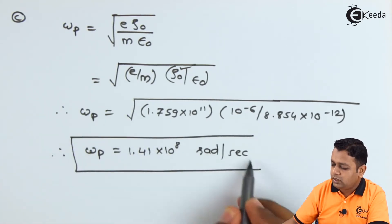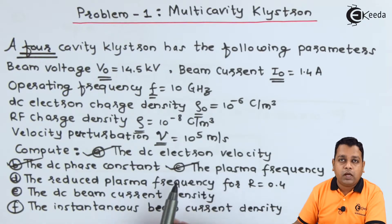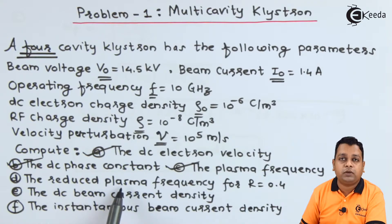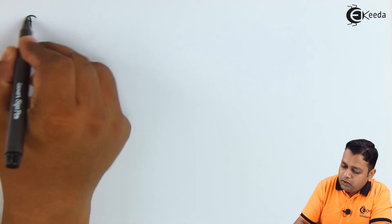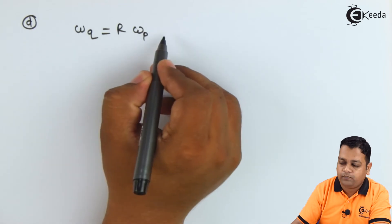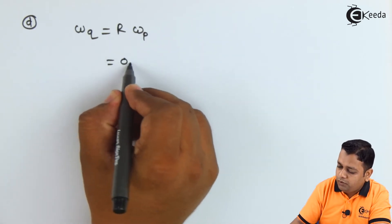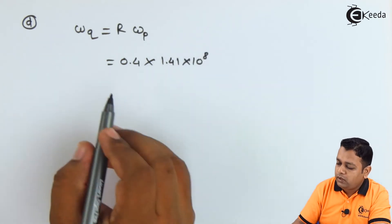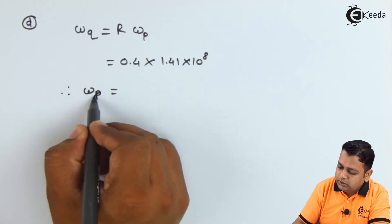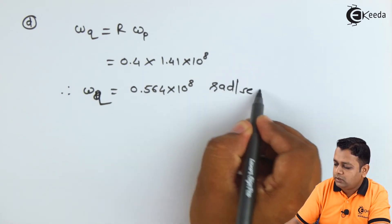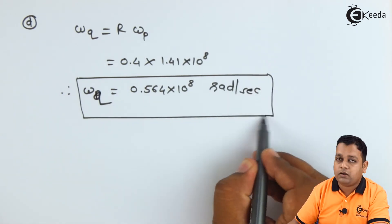For part D, we determine the reduced plasma frequency ωQ. The formula is ωQ = R × ωp. With R = 0.4 and ωp = 1.41 × 10^8 from part C, we get ωQ = 0.4 × 1.41 × 10^8 = 0.564 × 10^8 radian per second.